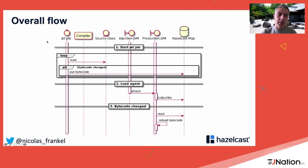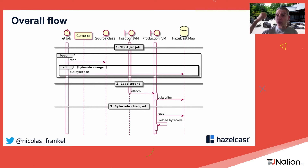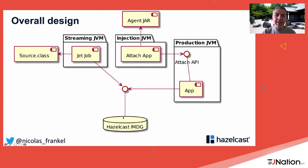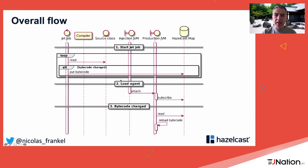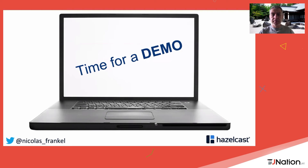In the sequence diagram: the Jet job loops over source class changes, filters out unchanged bytecode by comparing against the IMDG, then on step two the agent attaches to the production JVM, subscribes to the IMDG map, and whenever there is a new event it reads the bytecode and reloads it on the fly. Now it's time for the demo.